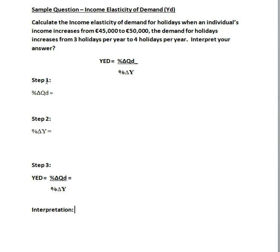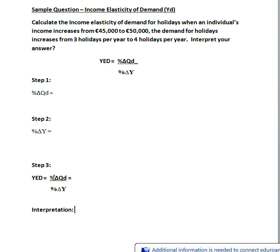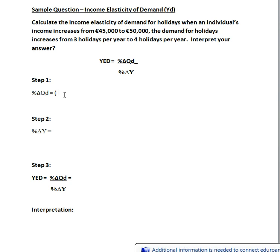Step one is to work out the percentage change in quantity demand. Step two is to work out the percentage change in income. And step three is to substitute your values into the overall formula from both step one and step two. So we'll start with step one: what is the percentage change in quantity demand?